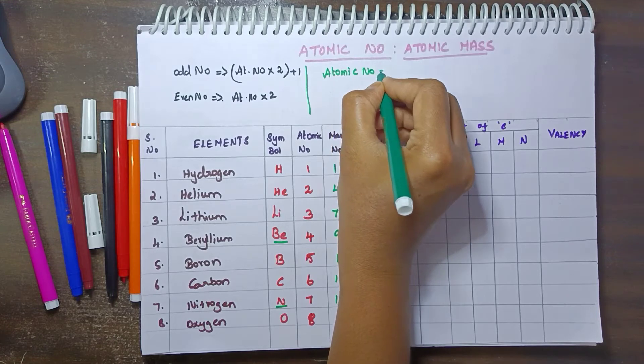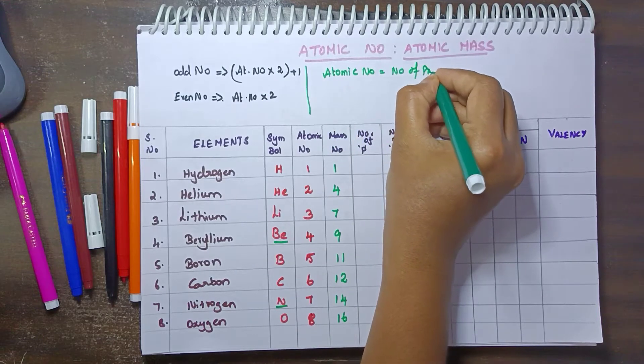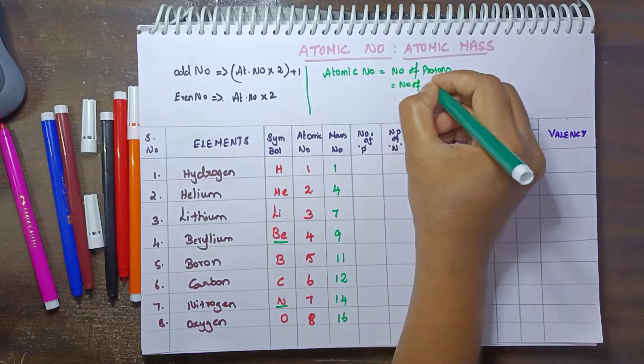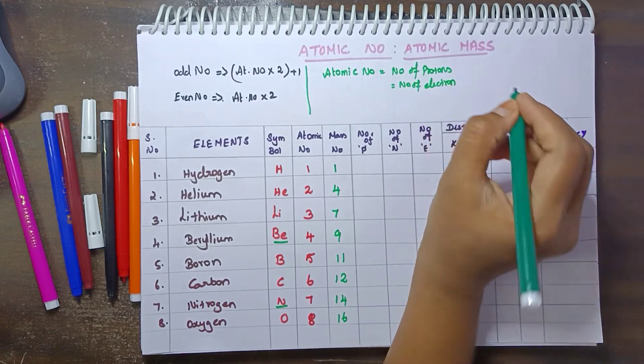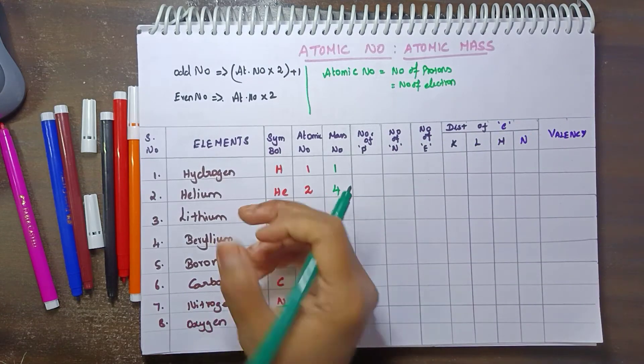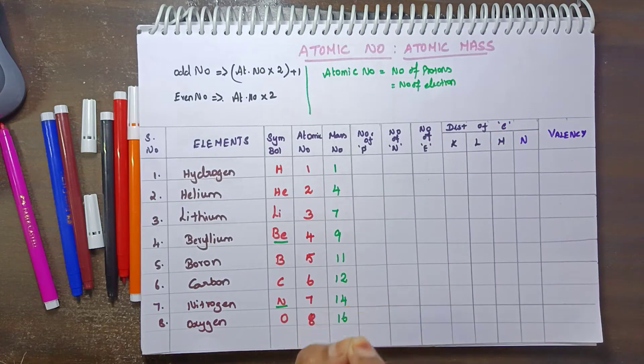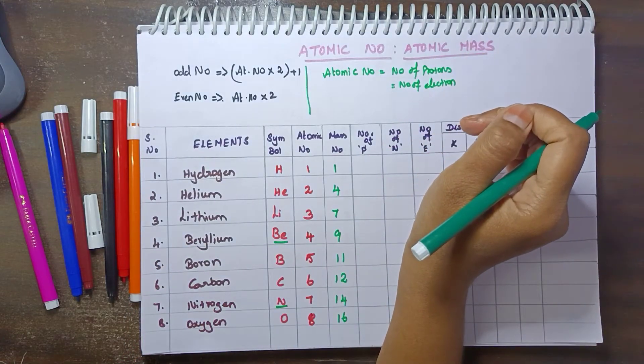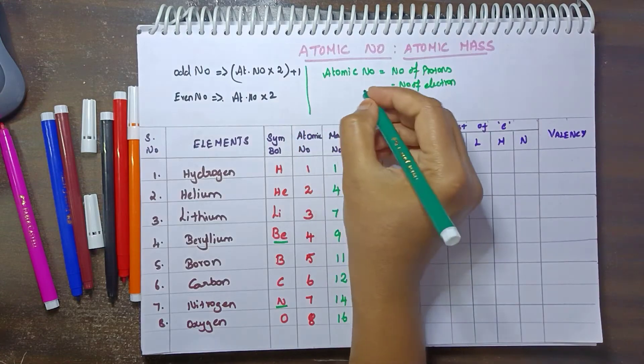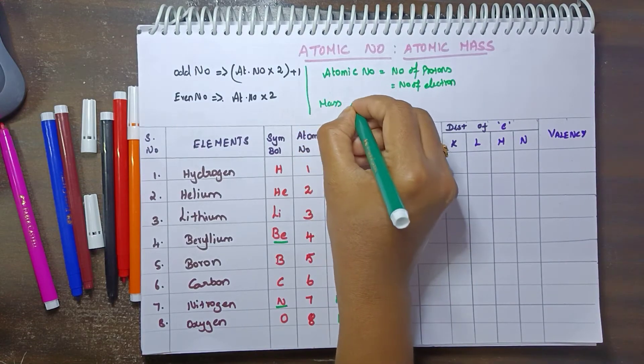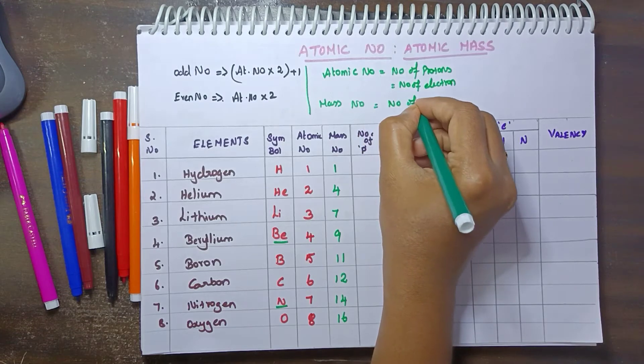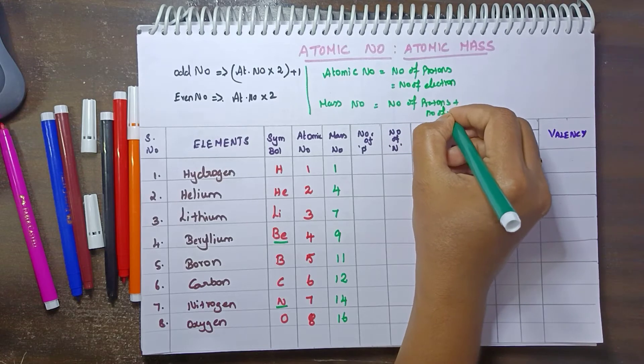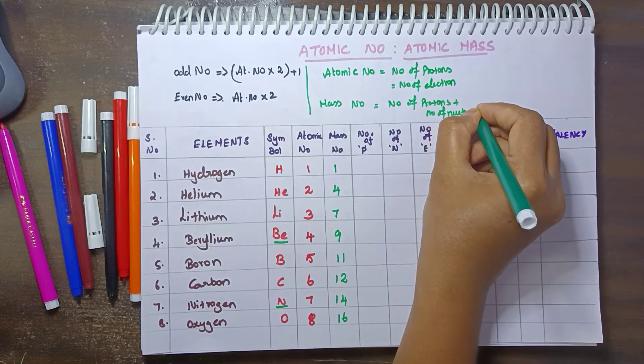Atomic number, that is equal to number of protons, that is equal to the number of electrons for a neutral element. If there's a charge plus or minus, it changes. Atomic number equals the number of protons equals number of electrons for neutral elements.